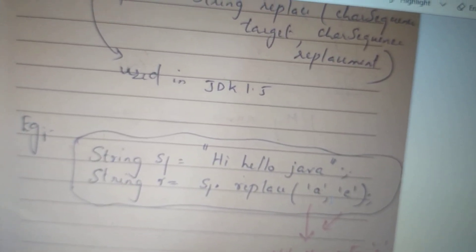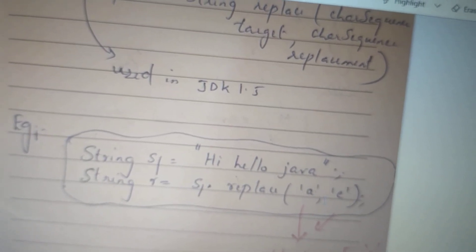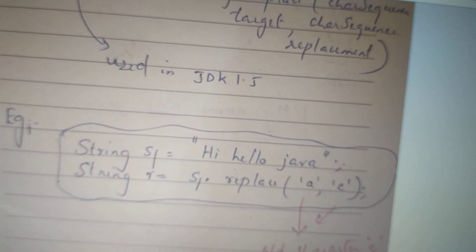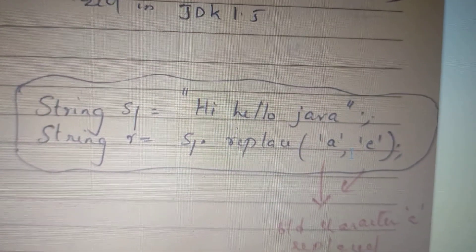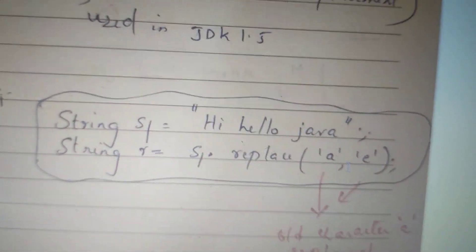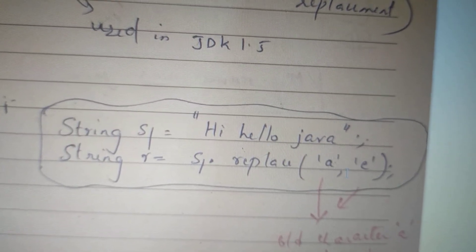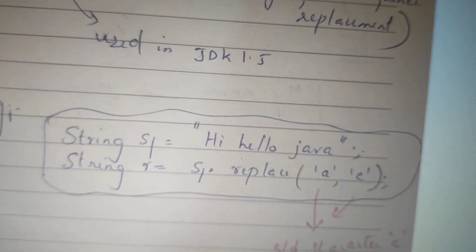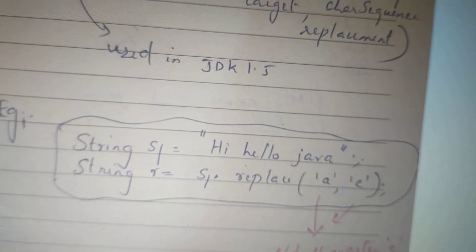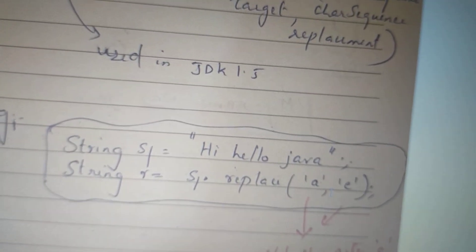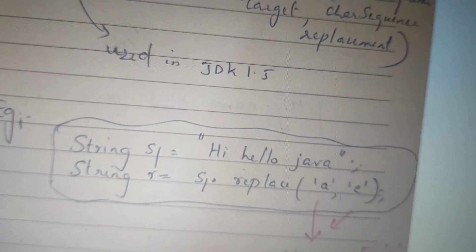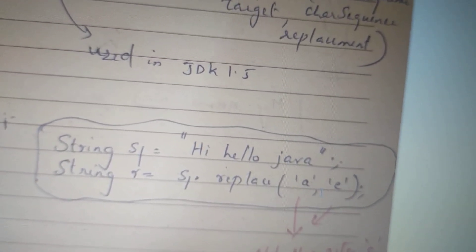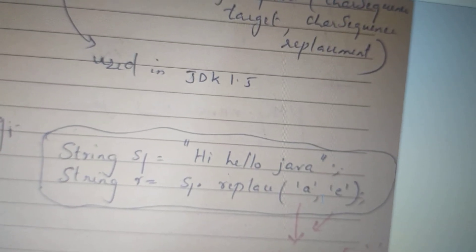We call S1.replace — that is dot replace. S1.replace is our function. Replace is not in small letters. We call it old character — I replace A with E. The first parameter is old, and the second parameter is the replacement. I replace A with E.